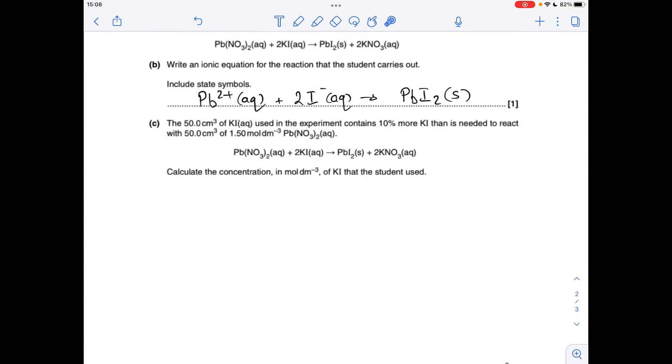Moving on to part B, so there's the equation again. The ionic equation for that reaction with state symbols. Well you can see that the two aqueous nitrate ions will cancel so they don't appear in the final ionic equation. The two potassium ions aqueous they will also cancel, so we're left with Pb2+ aqueous plus 2I- aqueous gives PbI2 solid and just make sure your state symbols are really clear. Sometimes solids can look like gases.